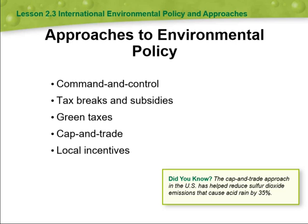Then we have cap-and-trade. Cap-and-trade is a market-based approach to controlling pollution. It involves setting a limit or a cap on the total amount of emissions allowed in a specific industry or region. Companies are then allocated permits that represent their allowed emissions. If a company emits less than their allocated amount, they can sell their excess permits to other companies.